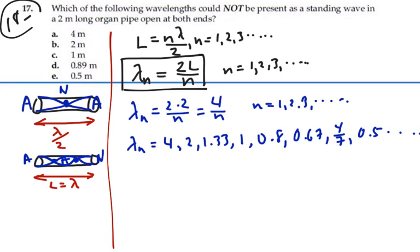So possibilities arise that four meters would work, two meters would work, one meter would work, point five meters would work. Point eight nine meters does not work, somewhere between one and point eight. So that is our answer. That could not be the wavelength that was standing in a wave in an organ pipe that is two meters long, open at both ends.